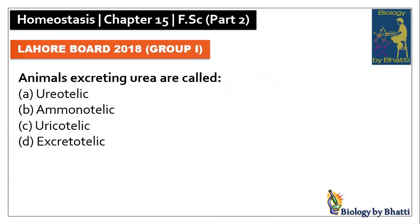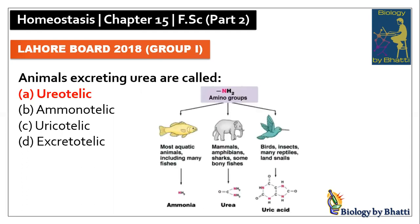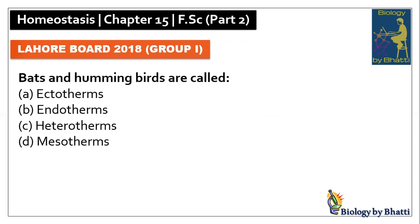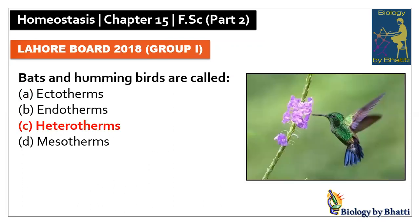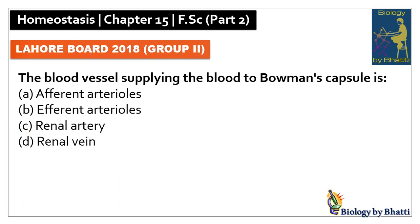Lahore Board 2018 Group 1: animals excreting urea are called ureotelic, so the answer was A option. In this paper, bats and hummingbirds are called heterotherms, so the answer is C option.